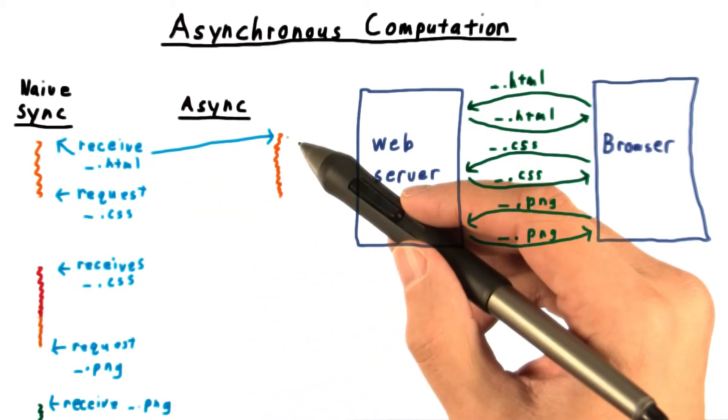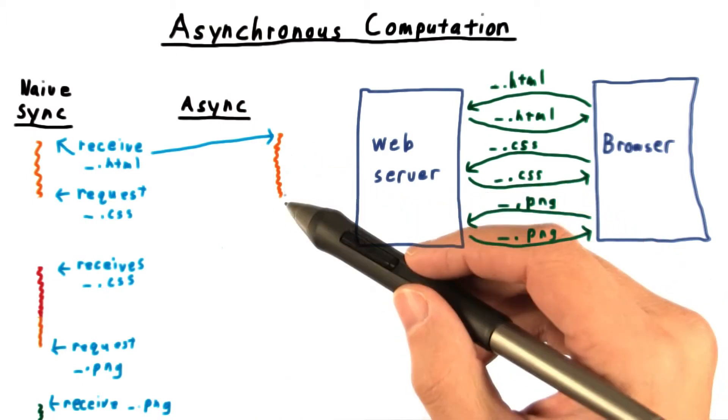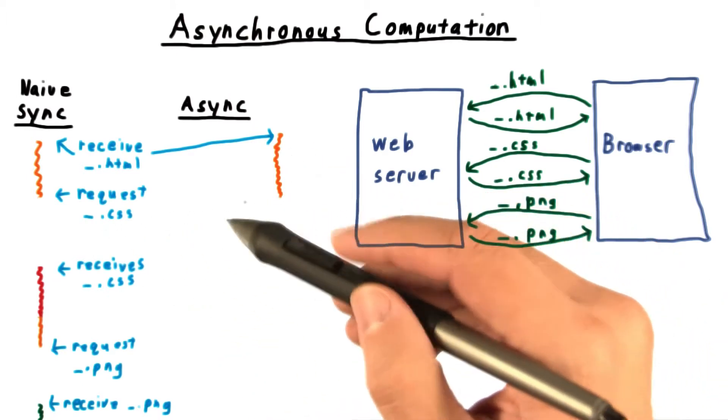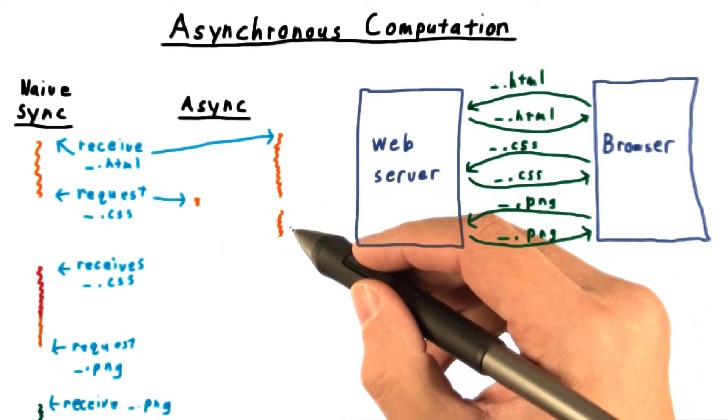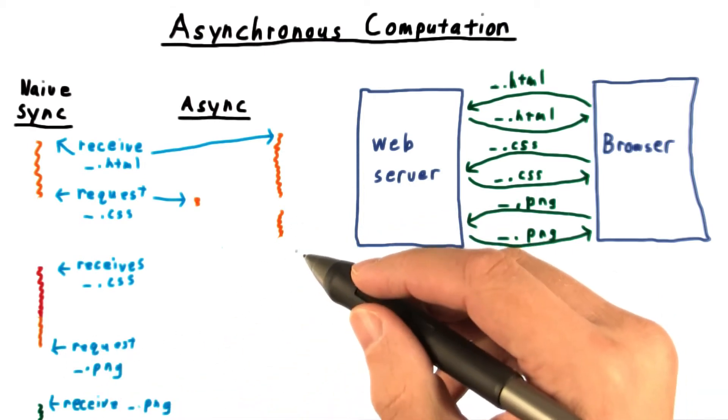So in the asynchronous approach, we would begin by processing the HTML file, just as we did in the naive approach. But when we find that we need to request a CSS page, we do so in a new thread. This allows our original thread to continue processing the HTML file and discover that he also needs to request a PNG file.